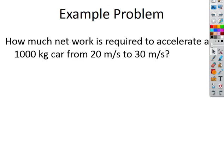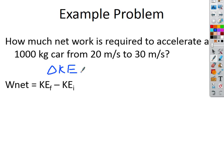How much net work is required to accelerate a 1,000-kilogram car from 20 meters per second to 30 meters per second? We're looking at the work-kinetic energy theorem: work equals the change in kinetic energy. Change in anything is final minus initial. I have the mass — 1,000 kilograms — initial velocity 20 m/s, and final velocity 30 m/s, so I have all the information I need.